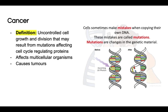What causes a cell to turn cancerous? One thing that can cause this is mutations — changes or mistakes that occur in the DNA. These changes can cause the cell to become cancerous. Cancer affects multicellular organisms and can lead to the formation of tumors, which are basically masses of cell growth.